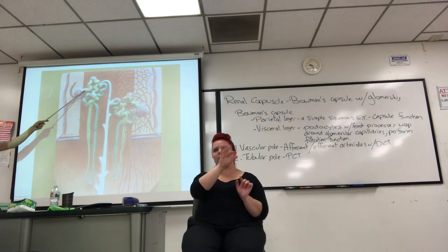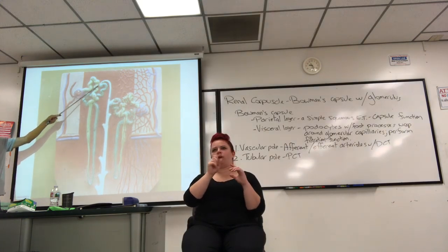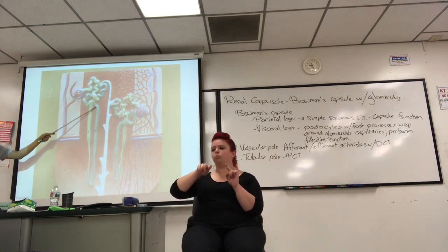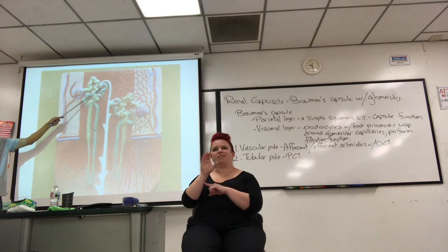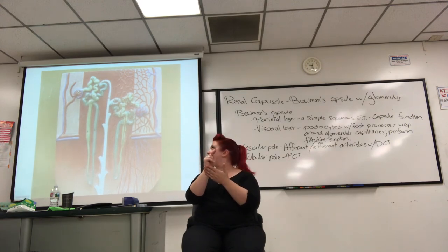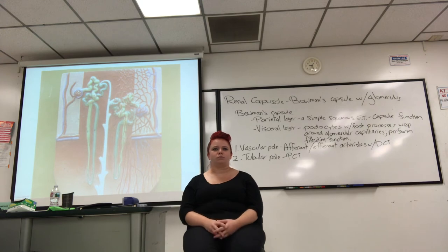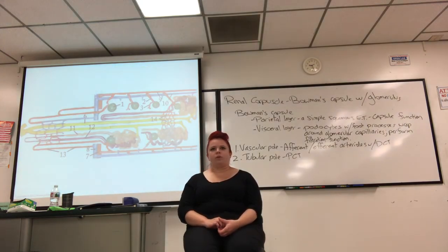Let's orient ourselves on this model they turned sideways. My orientation point: numbers 7 and 8 are the arcuate artery and vein. Therefore this side is cortex and medulla is on the other side. Number one — the green ball — that's the Bowman's capsule. Blood vessel number 9 is the interlobular. Therefore coming off it, number two is the afferent arteriole, so number three is the efferent arteriole.